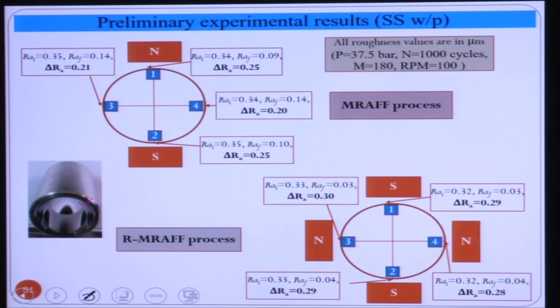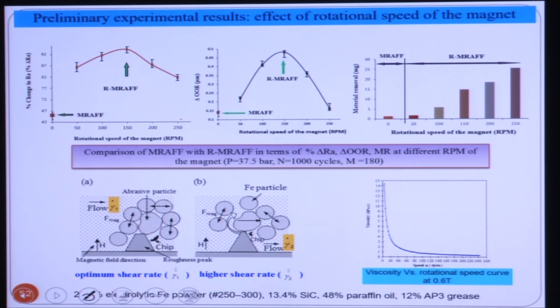After the flat workpiece experiments, rotational magnetorheological abrasive flow finishing was used for polishing the internal cylindrical surfaces of cylindrical workpieces. Surface roughness was checked at different locations before and after MRFF, and almost uniform polishing was achieved using the rotational MRFF process.